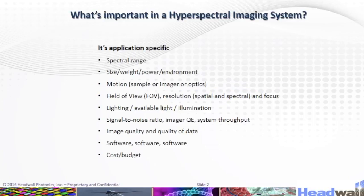What's important in a hyperspectral imaging system is application-specific: spectral range, size, weight, power, environment, motion, field of view, resolutions and focus, lighting, signal-to-noise ratio, image quality and quality of data, software, and cost budget.